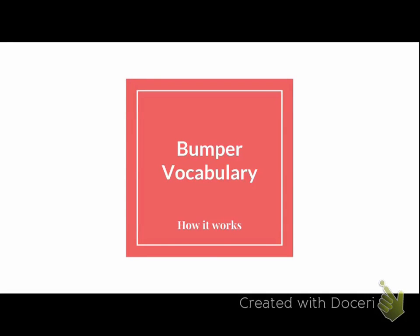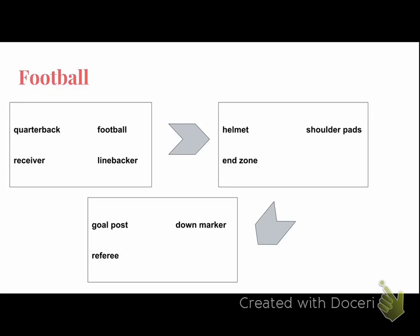In this short video, I'm going to show you how to do what we're going to refer to as bumper vocabulary. This will be a vocabulary activity that we do towards the end of a unit to kind of review and see how things connect. I'm going to show you how it's going to work when you get your vocabulary terms. The example I'm going to do is a football example, so we're going to take the science out of it completely and do football. Even if you aren't that familiar with football, I think you'll quickly catch on.